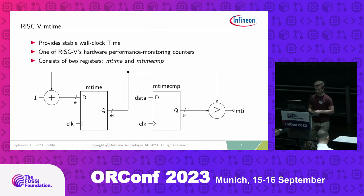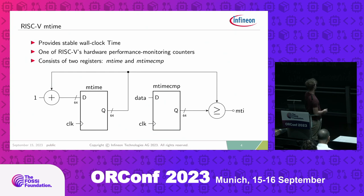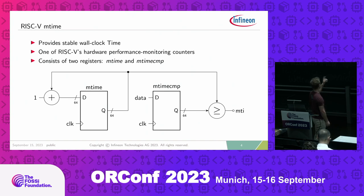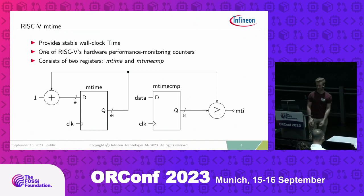mTime is one of RISC-V's hardware performance monitoring counters and consists of two registers: mTime and mTimeCompare. mTime is normally incremented for every clock cycle. mTimeCompare compares against mTime, and if mTimeCompare is less than or equal to mTime, we get an MTI — a machine timer interrupt.